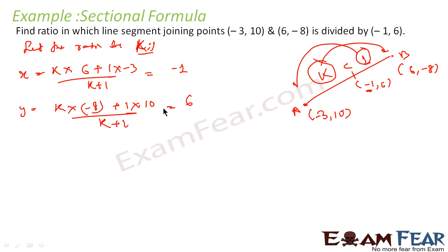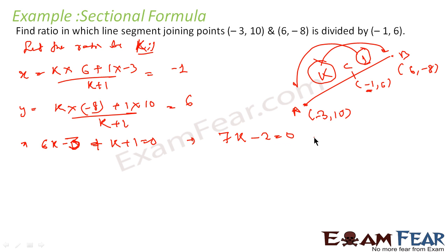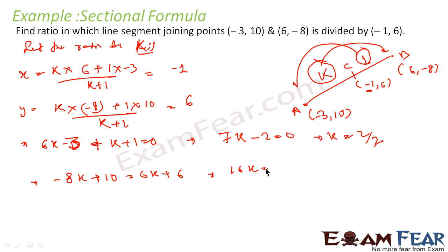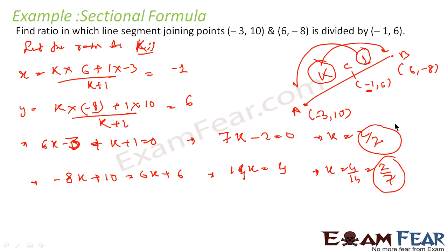We have got two equations. The first equation: 6k - 3 = -(k + 1), giving 7k = 2, so k = 2/7. The second equation: -8k + 10 = 6k + 6, giving 14k = 4, so k = 2/7. In both cases we get the same answer. So k = 2/7, meaning the ratio is 2 is to 7.